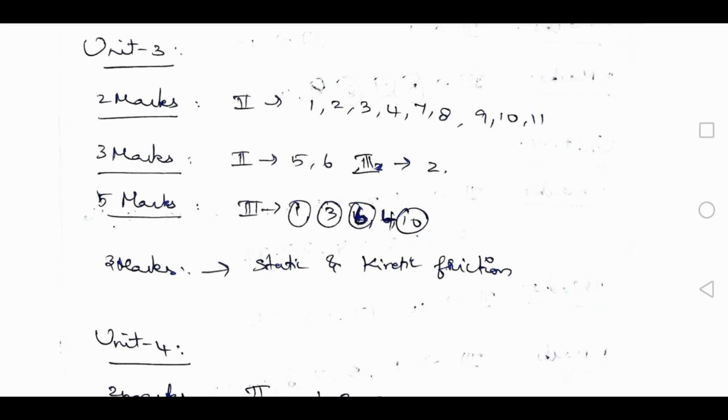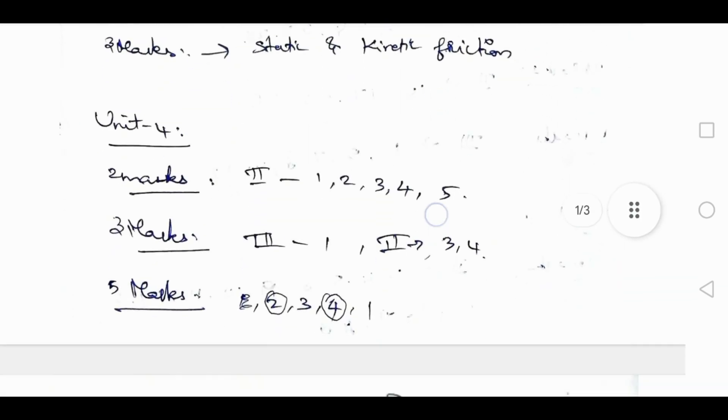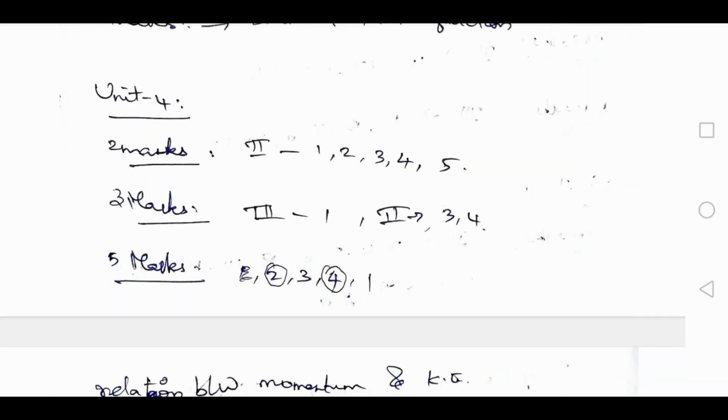And 10th one complementary. 3 mark is 3 - static and kinetic friction. Unit 4: 2 mark is 2nd rom letter 1, 2, 3, 4, 5. 3 mark is 2nd rom letter 3 and 4, 3rd rom letter 1st one. 5 mark is 1, 2, 3, 4, 2 and 4 - don't skip it.